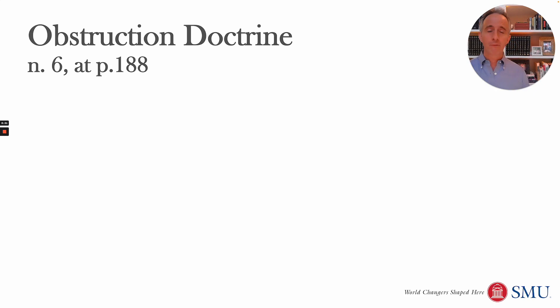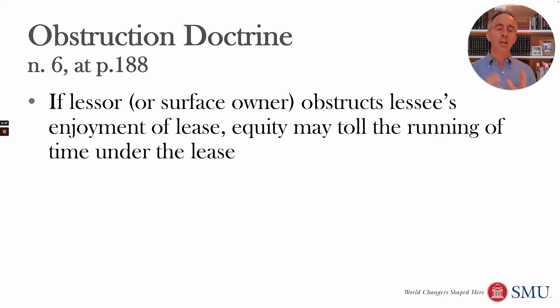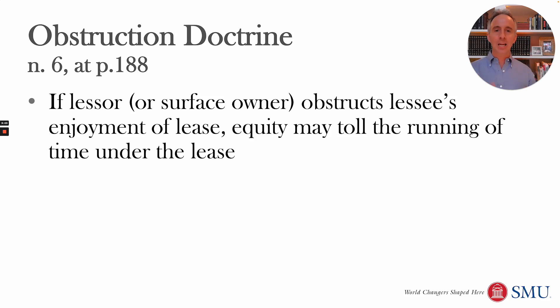If the landowner obstructs the oil and gas company's quiet enjoyment of the lease — their ability to come on and explore for and produce oil — equity is often going to toll the running of time under the lease. So even though the lease may only have a given amount of time to drill in the primary term, that period of time will be extended if the oil and gas company couldn't access the land because of obstruction by the surface owner.